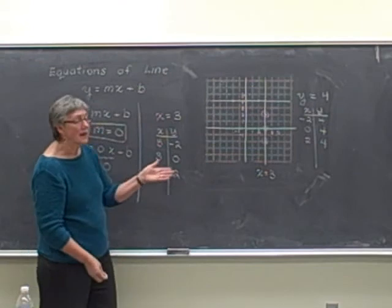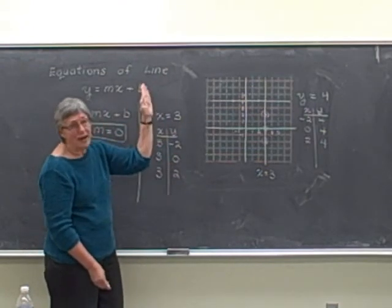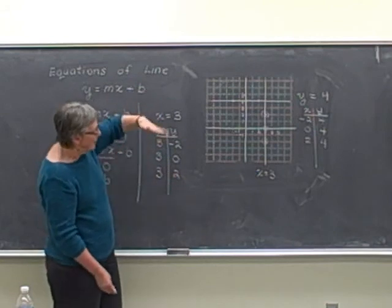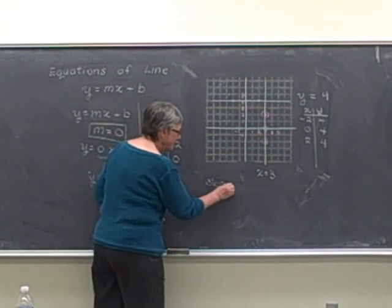In this case, if we look at the slope, it's just straight up and down. Again, it doesn't have any slant, but in this case, we say that the slope is not defined.